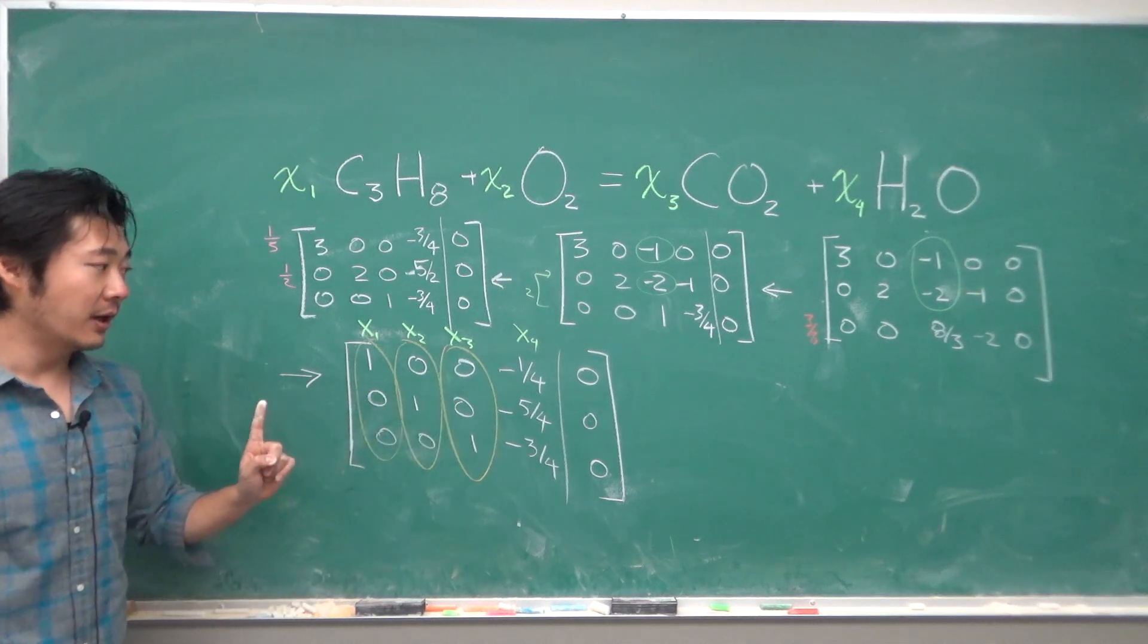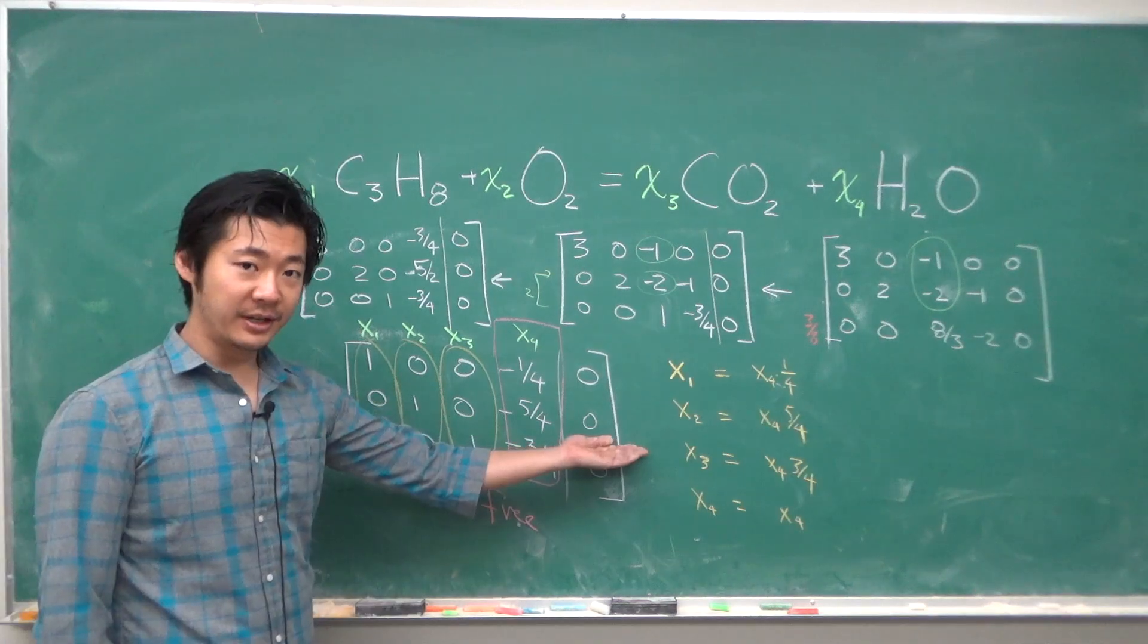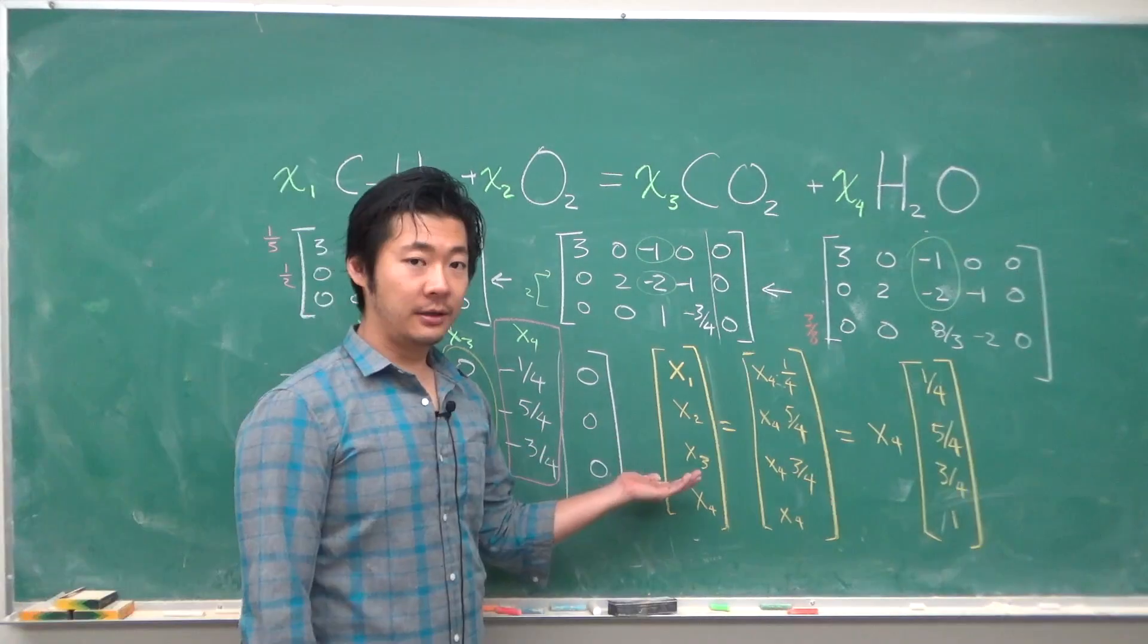Now writing out the solution, we have this linear system, which converting to vector form, we get something like this.